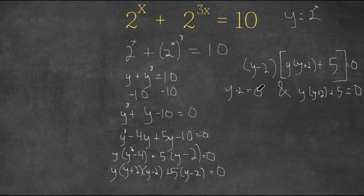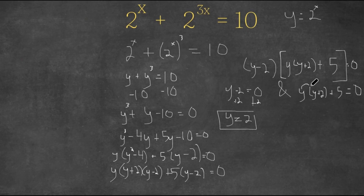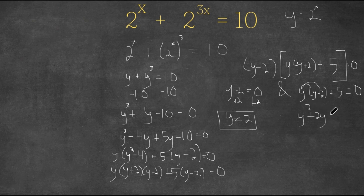We've now created two equations: y minus 2 equals 0, and y times y plus 2 plus 5 equals 0. Let's solve the first one — it's really simple. We simply add 2 on both sides to isolate y, and we get y is equal to 2. For the next solution, let's start by distributing y to y plus 2, so we get y squared plus 2y plus 5 equals 0.